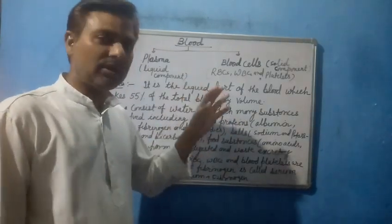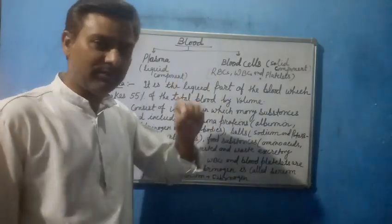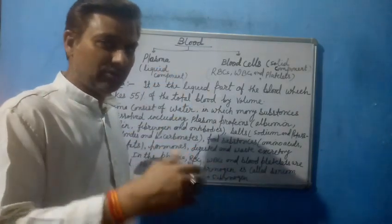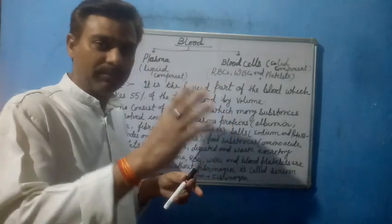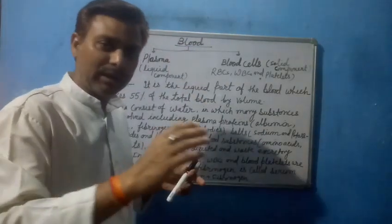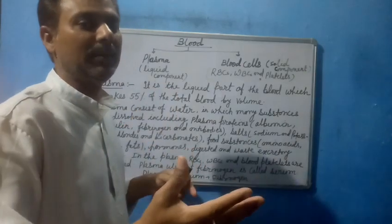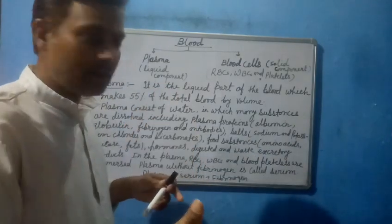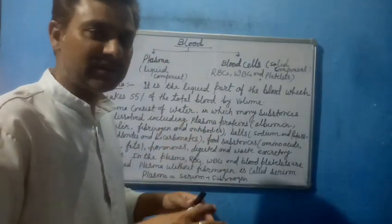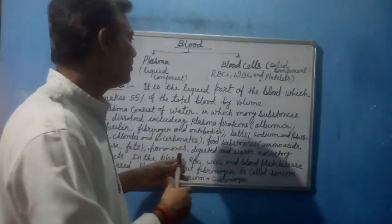The circulation of various substances inside the body takes place mainly with a fluid called blood. The circulatory system in human beings basically consists of blood, heart, and blood vessels. The circulatory system in the case of human beings is a closed circulatory system — the blood flows inside the blood vessels.